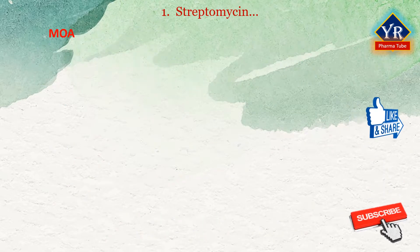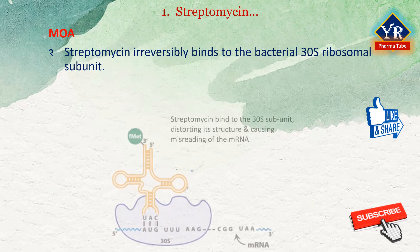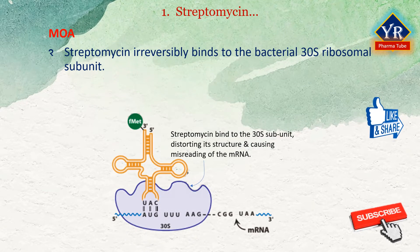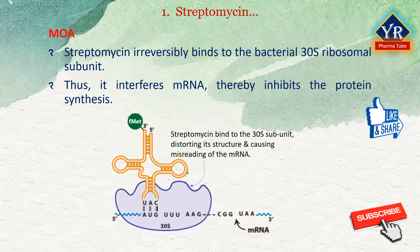Mechanism of action of streptomycin: Streptomycin irreversibly binds to the bacterial 30S ribosomal subunit. As a result, this agent interferes with the assembly of the initiation complex between mRNA and the bacterial ribosome, thereby inhibiting the initiation of protein synthesis. In addition, streptomycin induces misreading of the mRNA template and causes translational frameshift, thereby resulting in premature termination. This eventually leads to bacterial cell death.